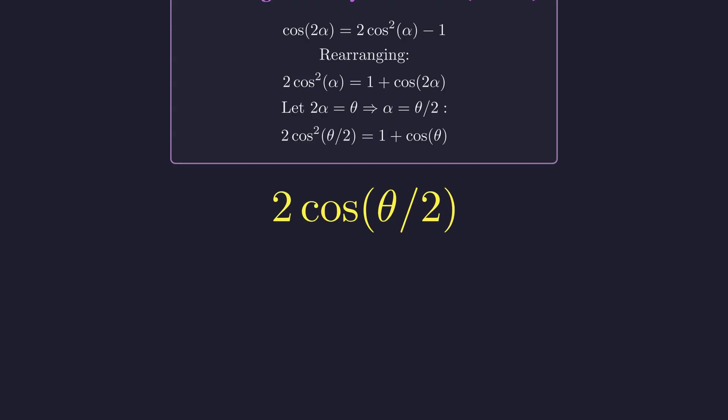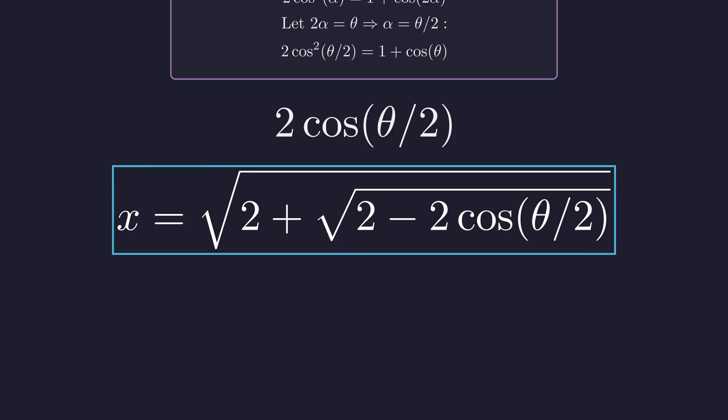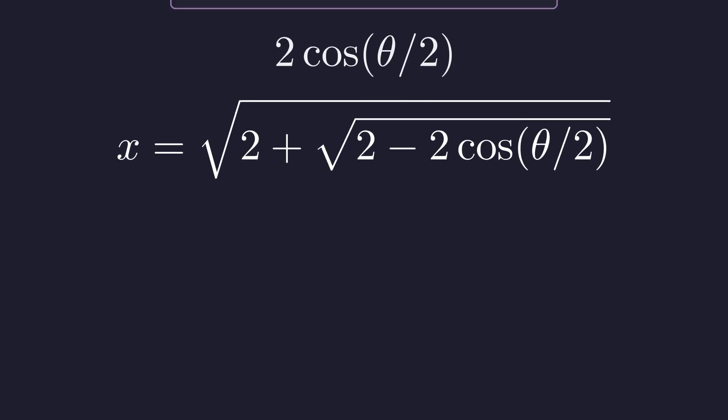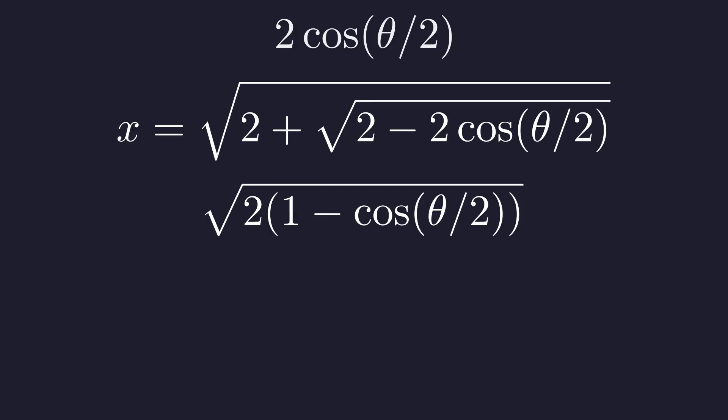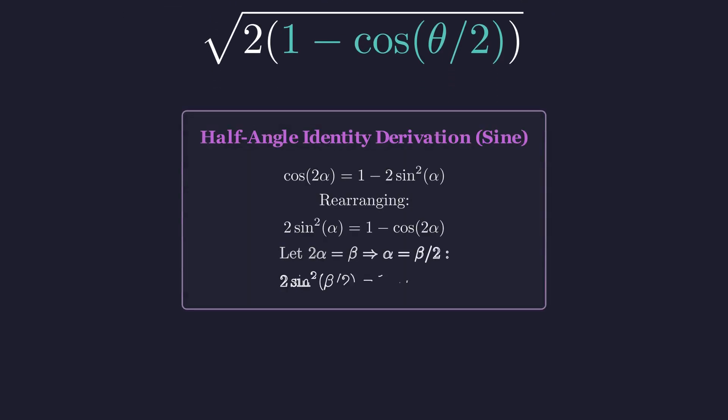We substitute this back into our main equation. Now for the next radical, we focus on this new innermost term. Following the same pattern, we first factor out the 2. This time we have 1 minus cosine. We need a different half-angle identity.